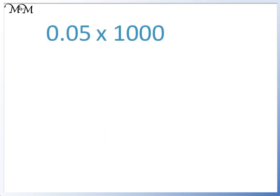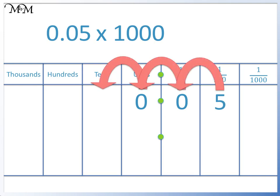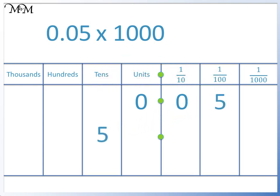Here we have 0.05 times 1000. When we multiply by 1000, we move each digit 3 places to the left. So we will move the 5 three places to the left. There is a space in the units column, so we write in a 0. 0.05 times 1000 equals 50.